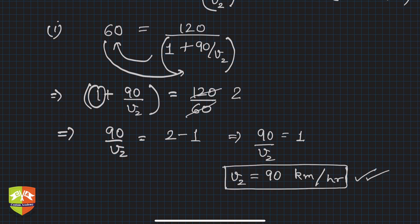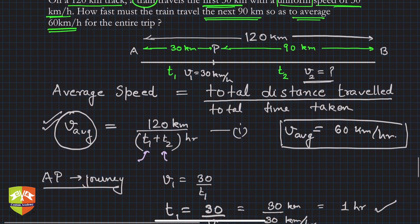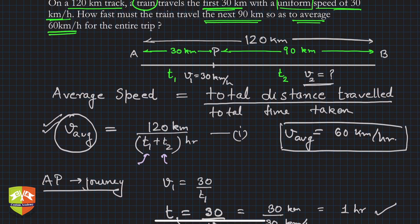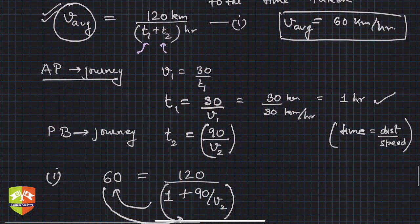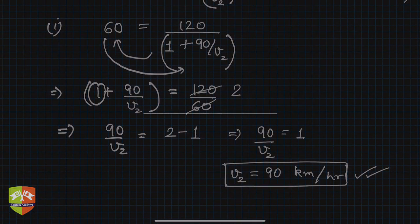So I hope you got the solution. The key learnings are: draw the diagram, read the question carefully, find the demand of the question, and go back to basics. The concept here was average speed — total distance by total time — and whenever speed is constant, speed equals distance upon time. These two things we employed here to get the solution.